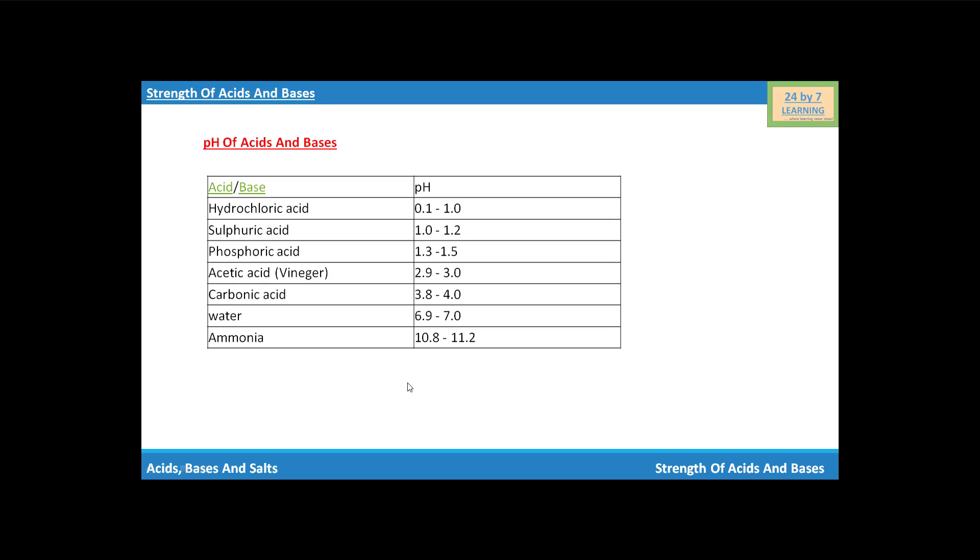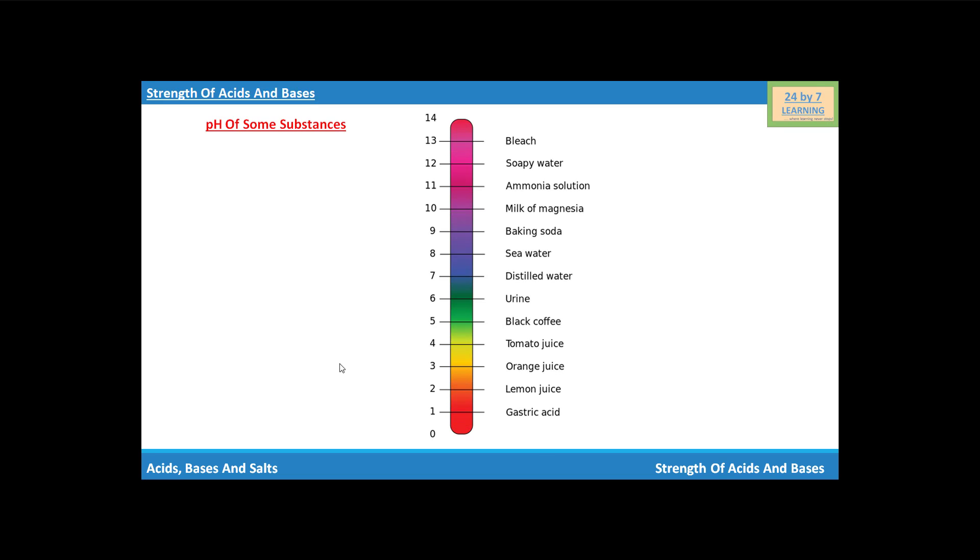These are some examples of acids and bases showing pH values. This is the pH scale, and here is given pH of some substances. You can see a bleaching agent will have pH value of 13.